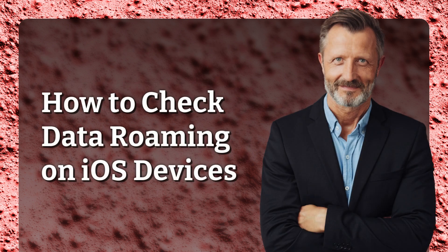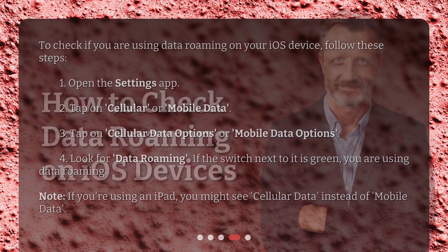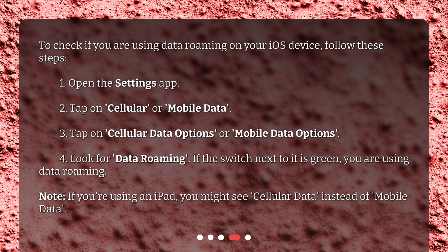How to check data roaming on iOS devices? To check if you are using data roaming on your iOS device, follow these steps. 1. Open the Settings app. 2. Tap on Cellular or Mobile Data. 3. Tap on Cellular Data Options or Mobile Data Options. 4. Look for Data Roaming. If the switch next to it is green, you are using data roaming. Note: if you're using an iPad, you might see Cellular Data instead of Mobile Data.